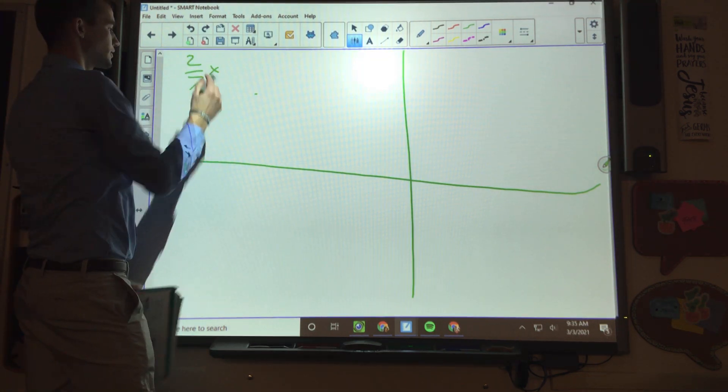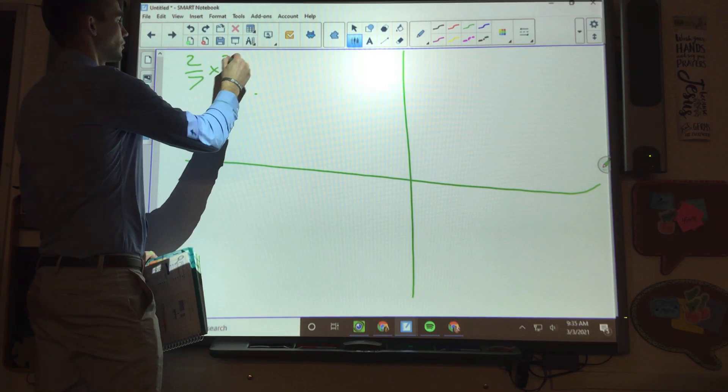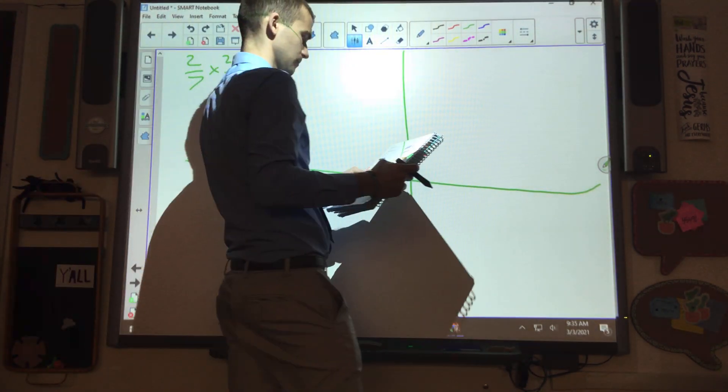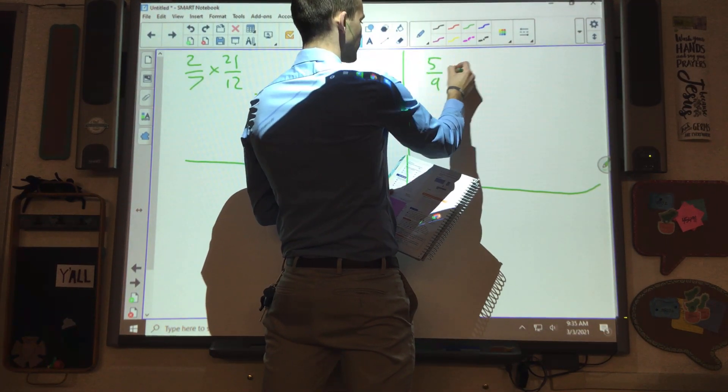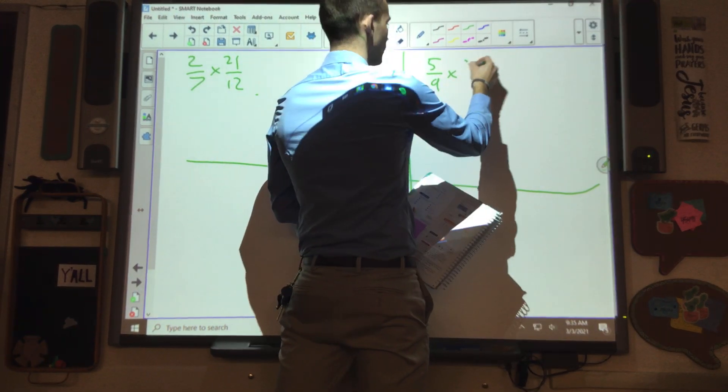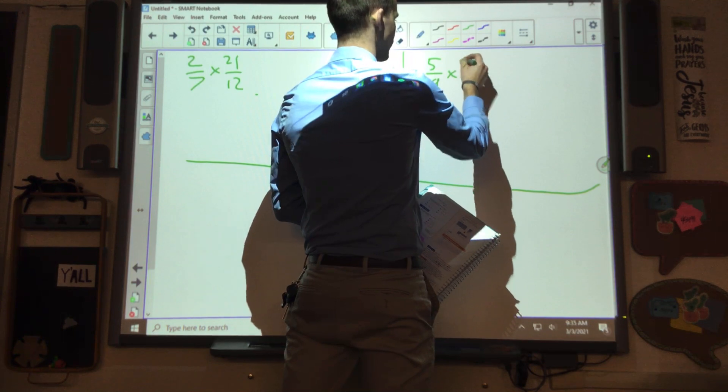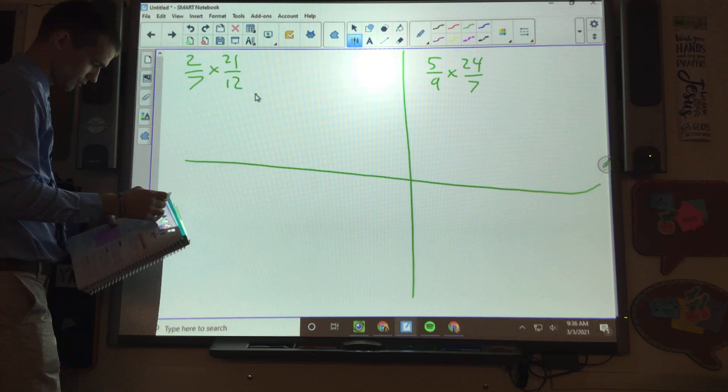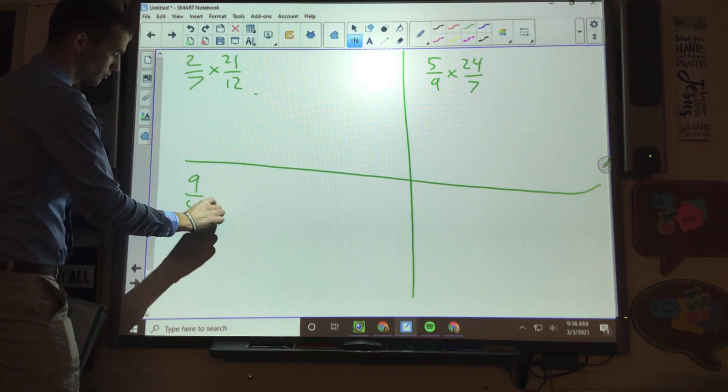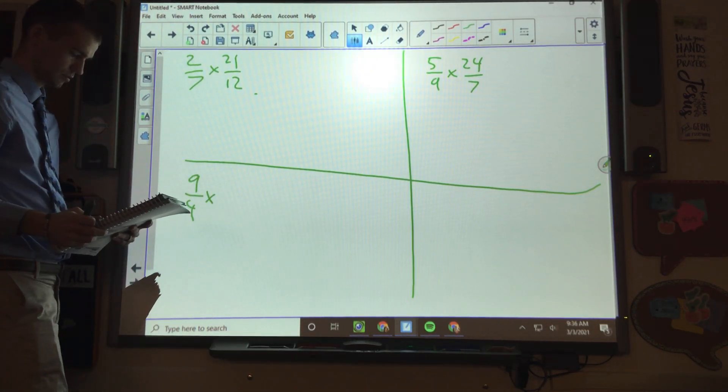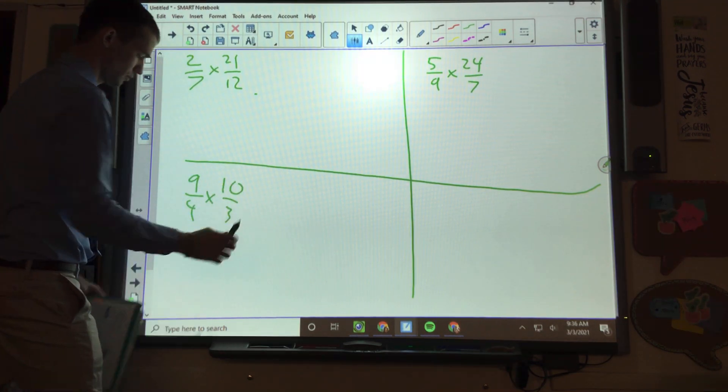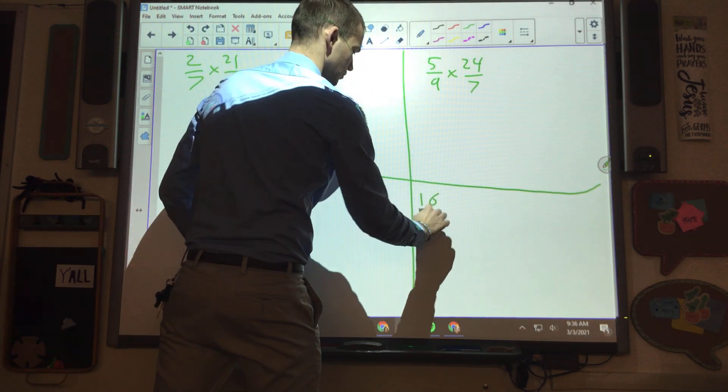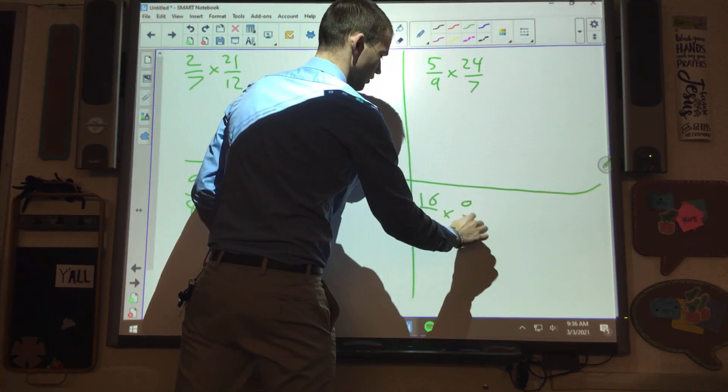2 over 7 times 21 over 12. 5 over 9 times 24 over 7. 9 over 4 times 10 over 3. And 16 over 3 times 9 over 4.